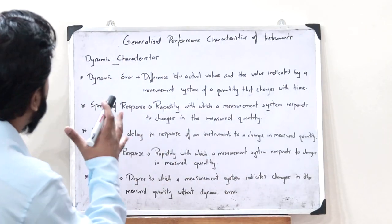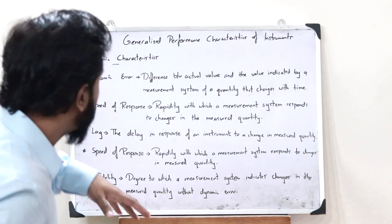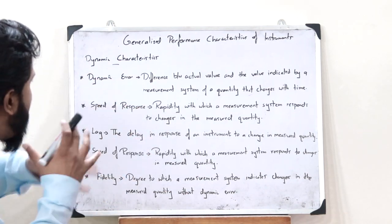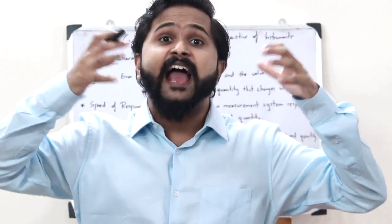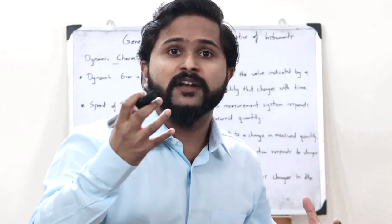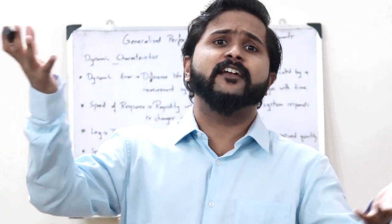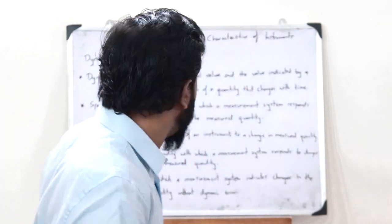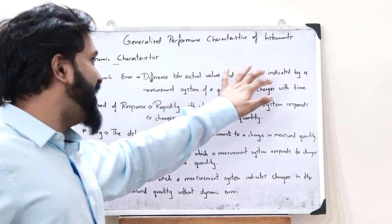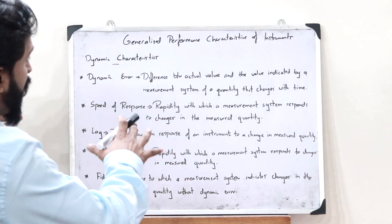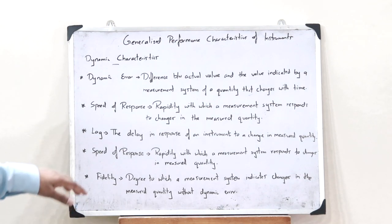Next, let us see the dynamic characteristics associated with a measurement instrument. The first dynamic characteristic is dynamic error, which is the difference between the measured value and the actual value of a quantity that varies with time. For example, the speed inside your car varies with time, so the dynamic error is the difference between the actual value and the value indicated by the measurement system.